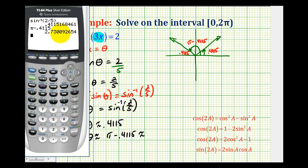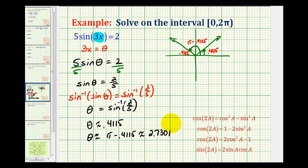So we have θ ≈ 0.4115 and θ ≈ 2.7301. Substituting back, 3x ≈ 0.4115 and 3x ≈ 2.7301.